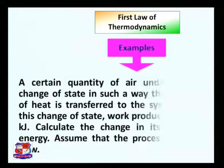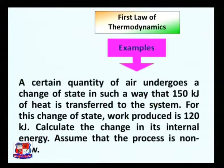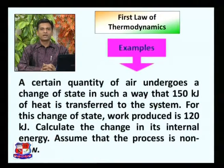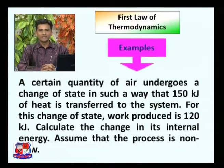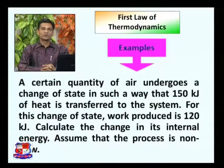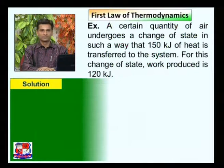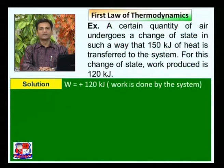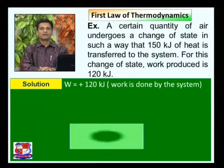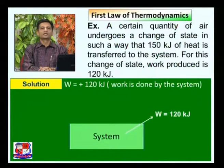Another example based on the first law of thermodynamics: a certain quantity of air undergoes a change of state in which 150 kJ of heat is transferred to the system and 120 kJ of work is produced. Calculate the change in internal energy, assuming a non-flow process. The given data: W = +120 kJ since work is done by the system, which should be represented accordingly.